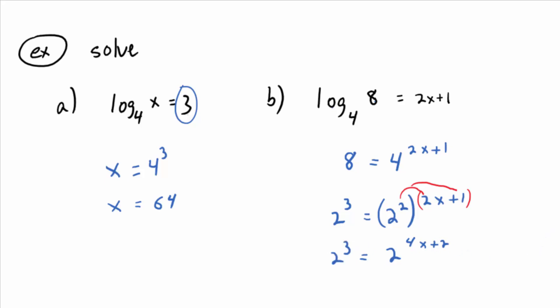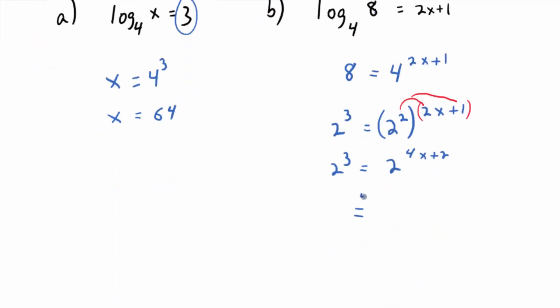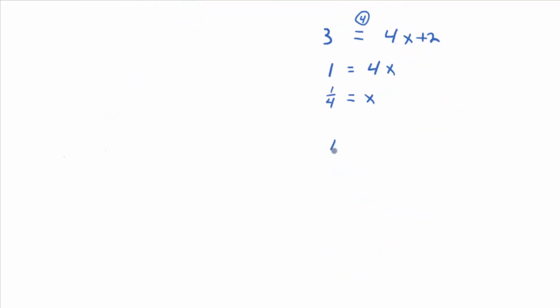So what can you say about the exponents by property four? So by this next equal sign is by property four. You could set three. You could drop the base two and set three equal to four X plus two. And now you know how to solve it. Does that make sense? In fact, what's the answer gonna be? So subtract two from both sides. You get one equals four X. So what does X equal? One fourth. I don't like writing it that way. I'm gonna write it as X equals one fourth.